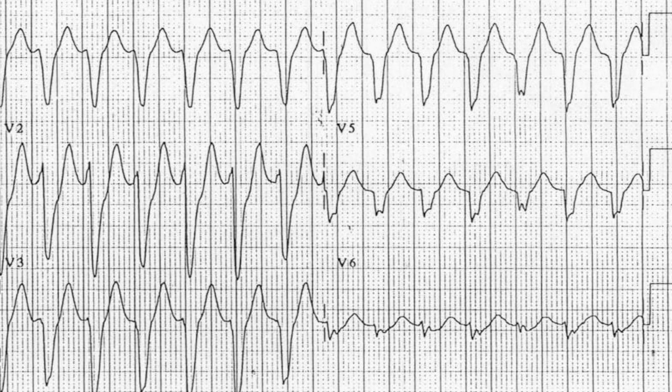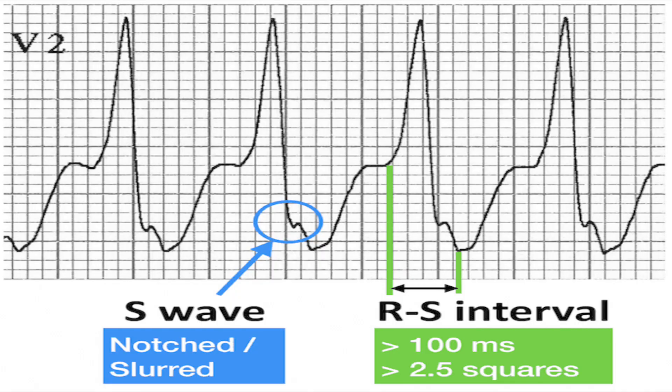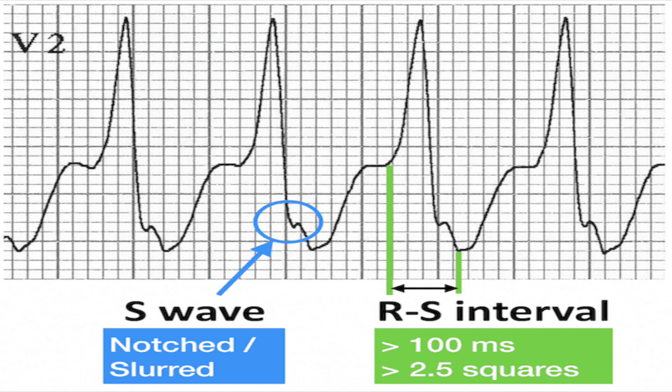Now, if concordance isn't clearly pointing to VT, then we've got to look at the RS interval. It's just a measurement right on the EKG printout. We're looking for 100 milliseconds — longer than that, chances of VT are higher. That's a big red flag on the EKG. Two clues down.